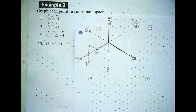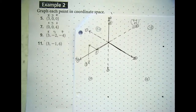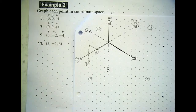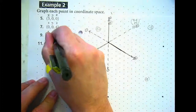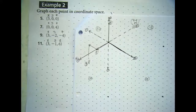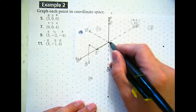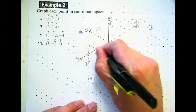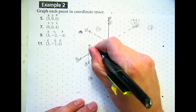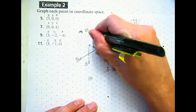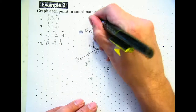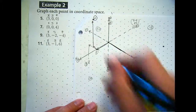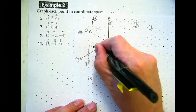Try number 11 to make sure you've got it. For number 11: 3 on x, negative 1 on y, and 6 on z — it just barely fits. You don't have to draw the lines — it's just sometimes helpful when you're beginning. If you can see the point well without them, that's fine.